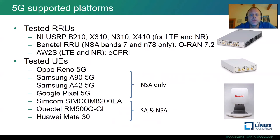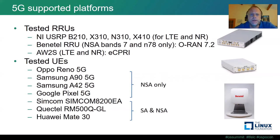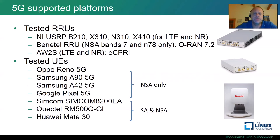More recently, we're supporting some more commercial radio units — one from an Irish company called Benetel, which implements one version of the ORAN 7.2 fronthaul interface. We're also working with another radio unit from a company in France called AW2S, which is functional for both LTE and 5G New Radio and uses an eCPRI fronthaul interface, which is similar in spirit to ORAN. We've also listed some of the UEs tested with our software, some only in non-standalone mode and others in both standalone and non-standalone.